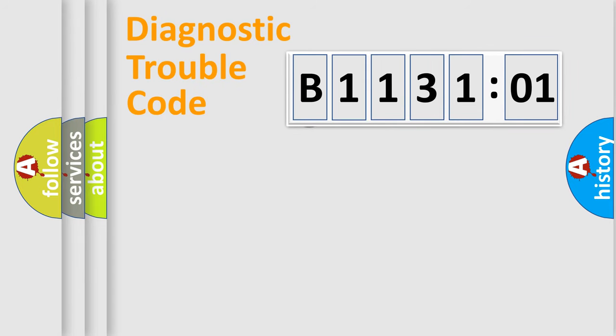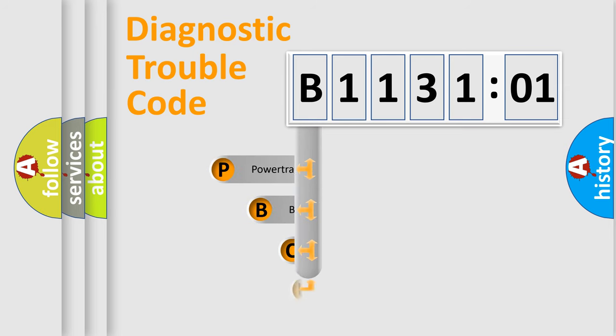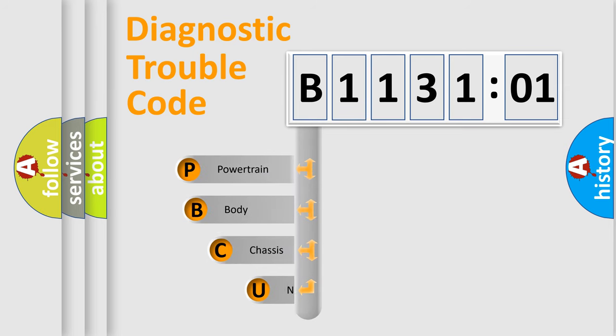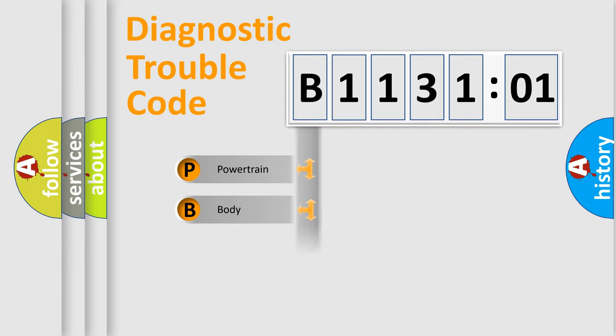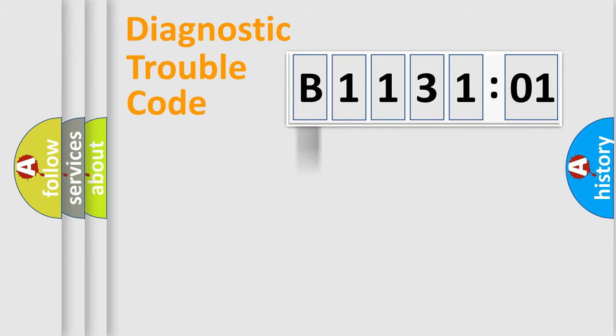First, let's look at the history of diagnostic fault code composition according to the OBD2 protocol, which is unified for all automakers since 2000. We divide the electric system of the automobile into four basic units: Powertrain, Body, Chassis, and Network.